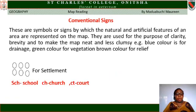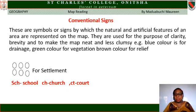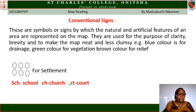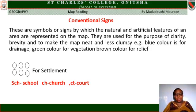Conventional signs. These are symbols or signs by which the natural and artificial features of an area are represented on the map. They are used for the purpose of clarity, brevity, and to make the map neat and less cluttered. For example, blue color is used for water or drainage, green color for vegetation, brown color for relief. Dots are used to show settlement. 'Sch' represents school, a cross represents church, and other symbols represent courts and buildings.